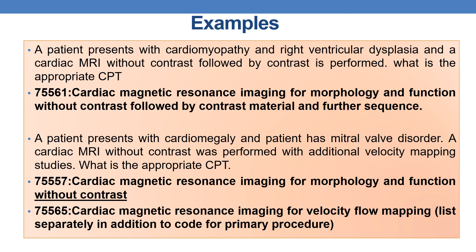Let us discuss some examples. First: a patient presents with cardiomyopathy and right ventricular dysplasia, and a cardiac MRI without contrast followed by contrast is performed. What is the appropriate CPT? The answer is 75561 — cardiac magnetic resonance imaging for morphology and function without contrast followed by contrast material and further sequence.